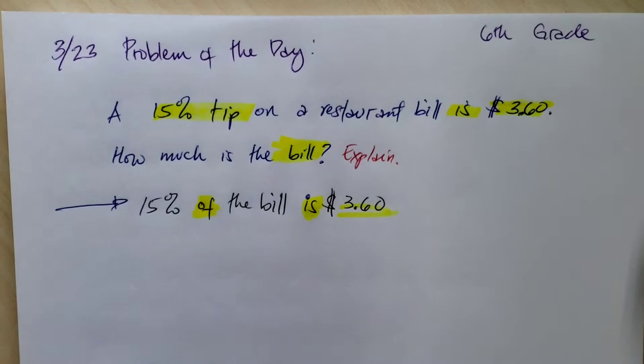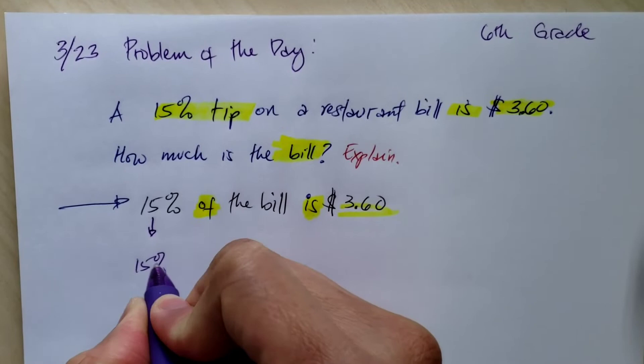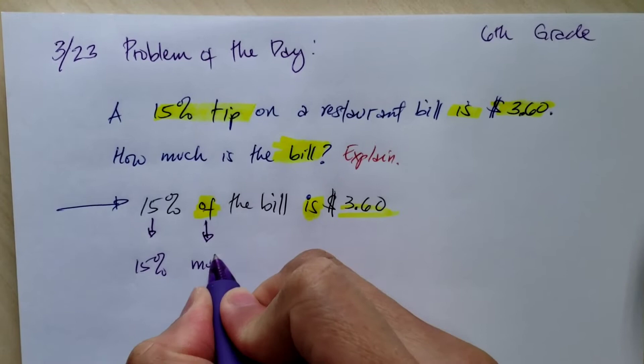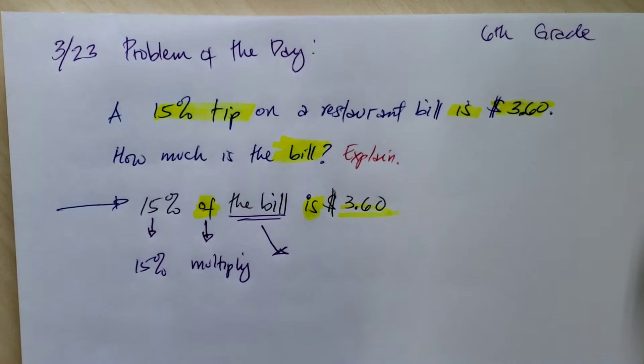So remember, let's change this into a mathematical sentence. So 15% is 15%. That's the percent. Of usually in this case means to multiply the bill.